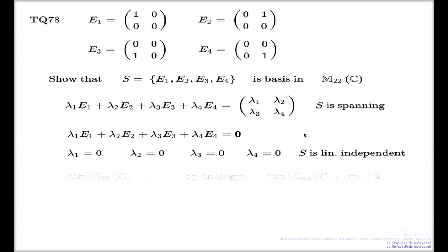And so we have a basis, right? And that's why the dimension of the space of 2×2 matrices with complex entries is 4.